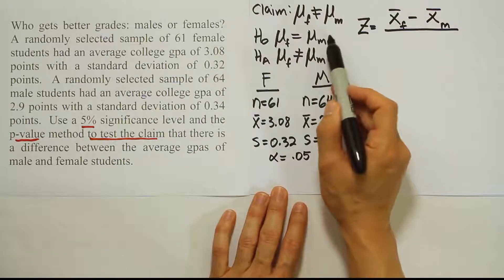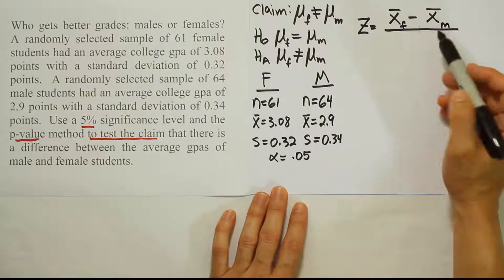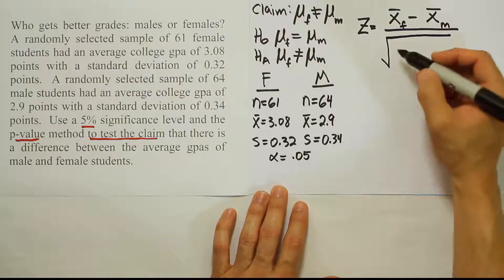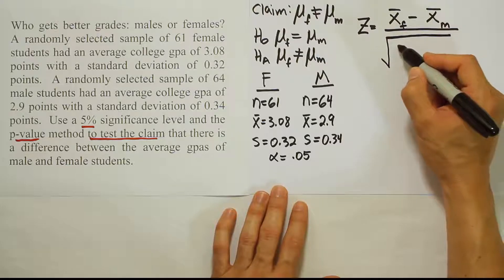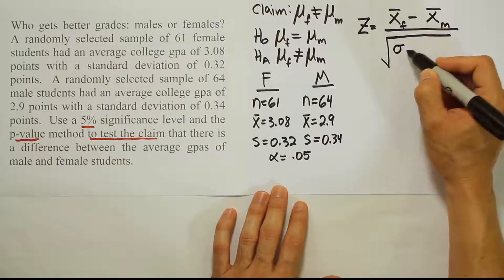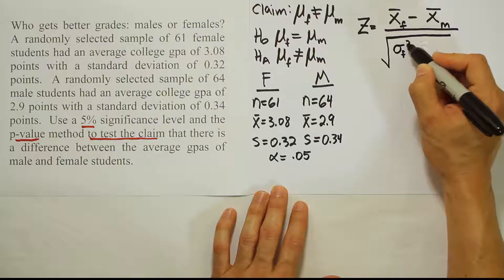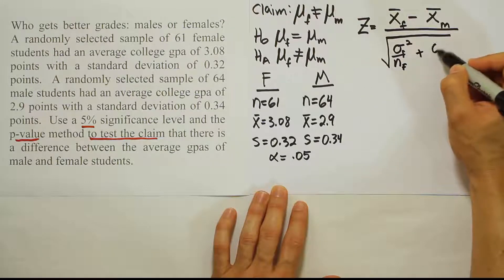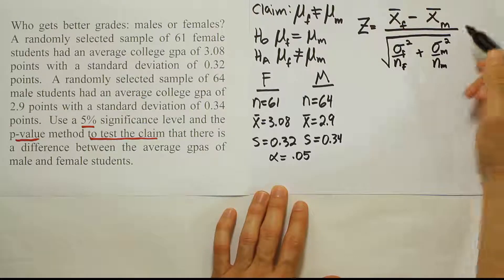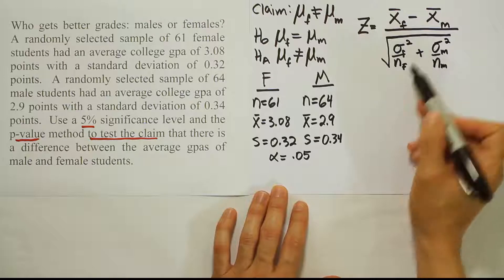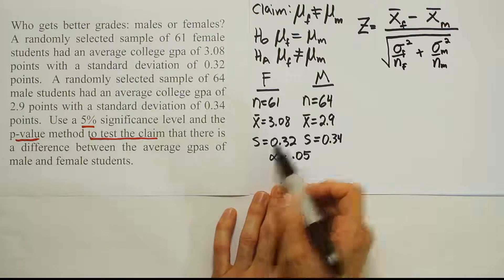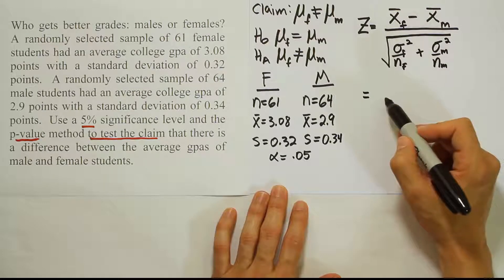Normally you have a minus d sub 0 in the formula. That would be if you had a number in H0 somewhere, but we don't have a number so we don't have to include that. Then we'll have the square root of sigma for the females squared over n for the females, plus sigma for the males squared over n for the males. However, we won't have the population values. We'll use the samples as an estimate of that. So we use s² instead of σ². Let's plug in the numbers and see what we get.